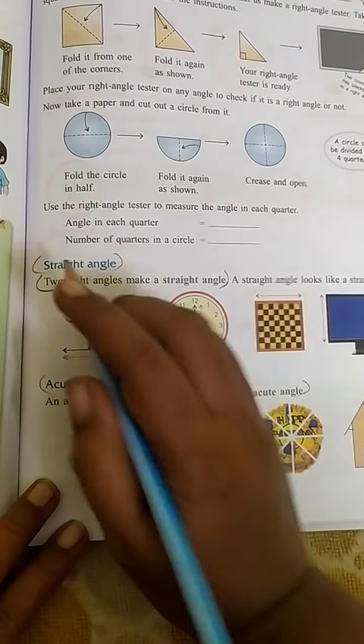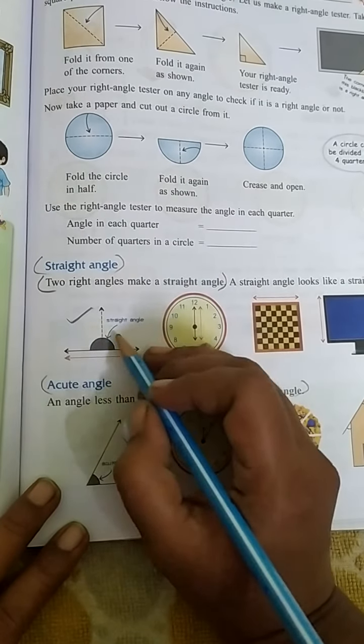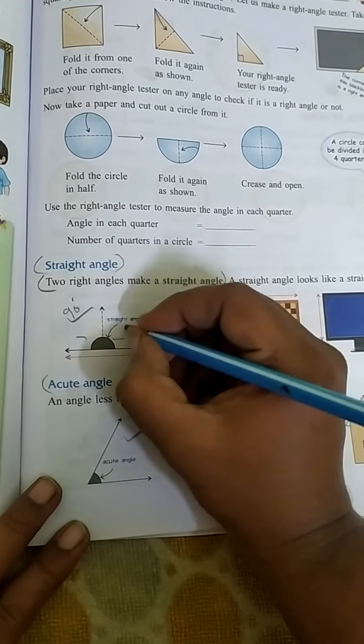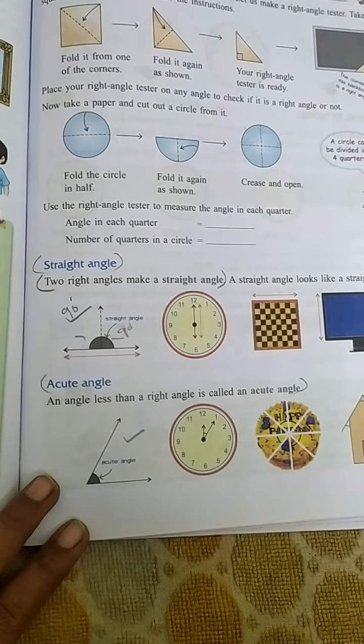Then when you see a straight angle, two right angles make a straight angle. This side one right angle, this side one right angle. Right angle has 90 degrees. So two right angles, it is 180 degrees.